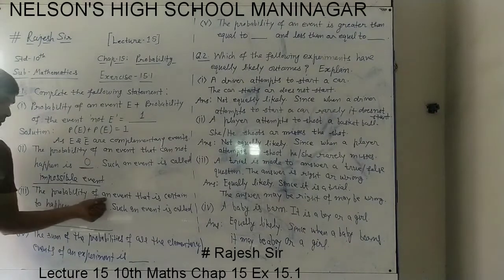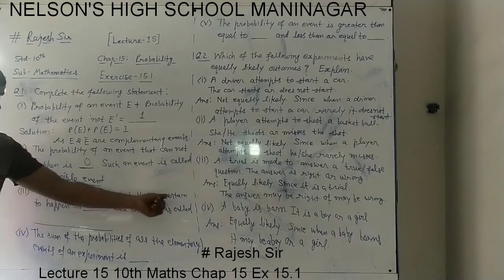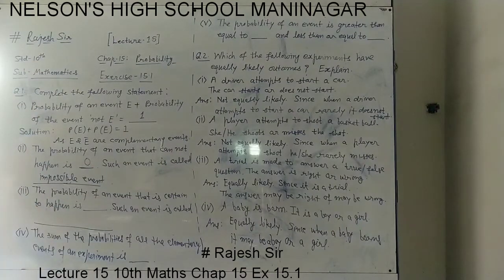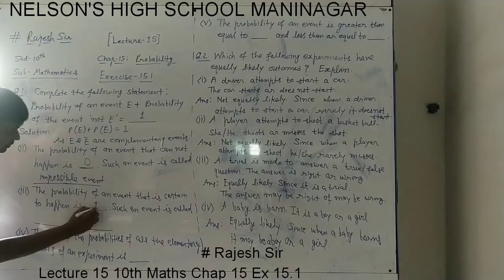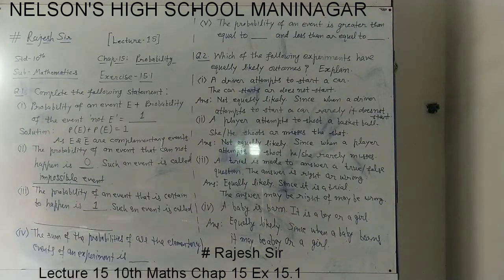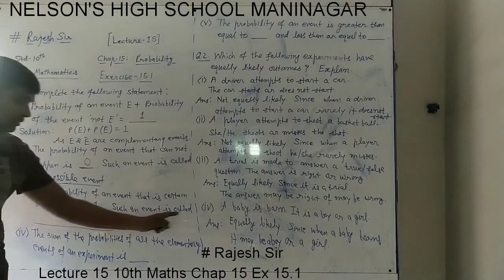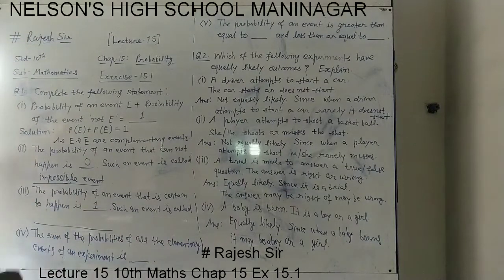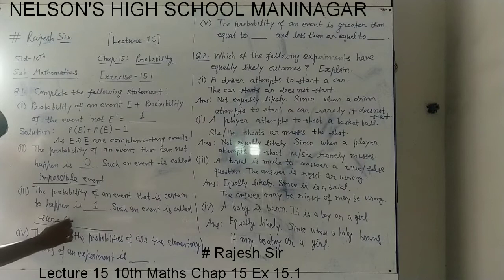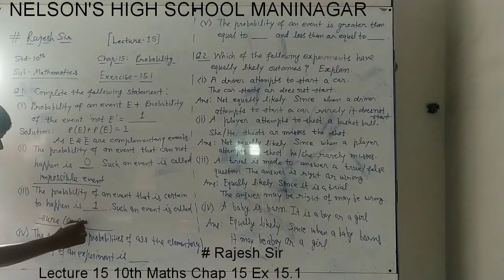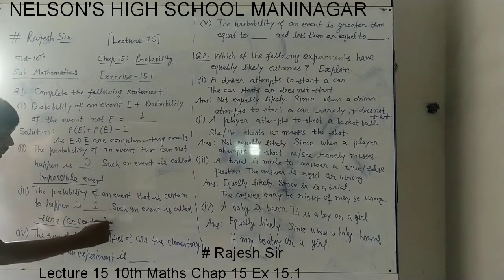Similarly, the probability of an event that is certain to happen — in theory we have seen — is 1. Probability of a sure or certain event is 1, and such an event is called a sure or certain event. You can use either word — sure or certain.